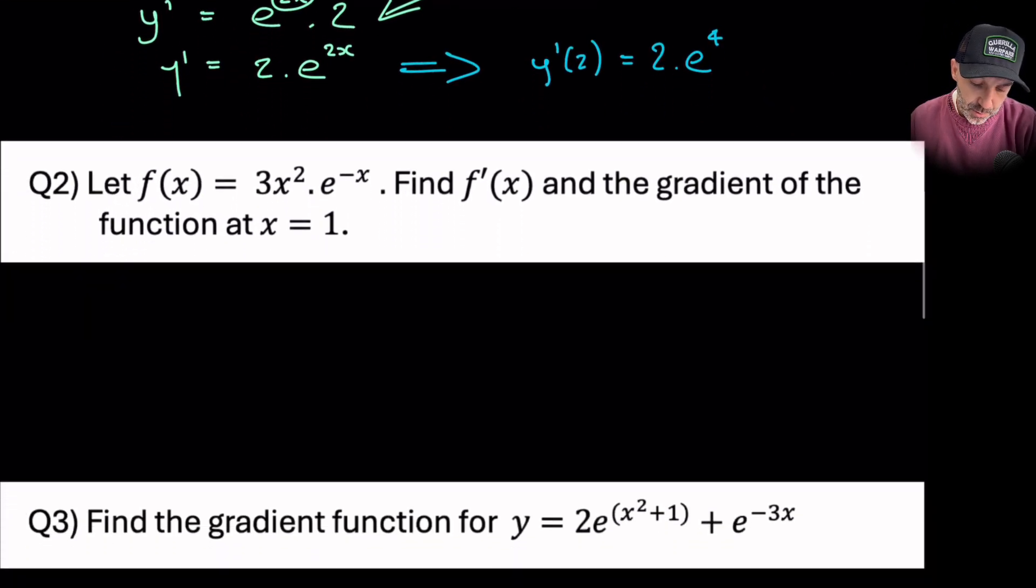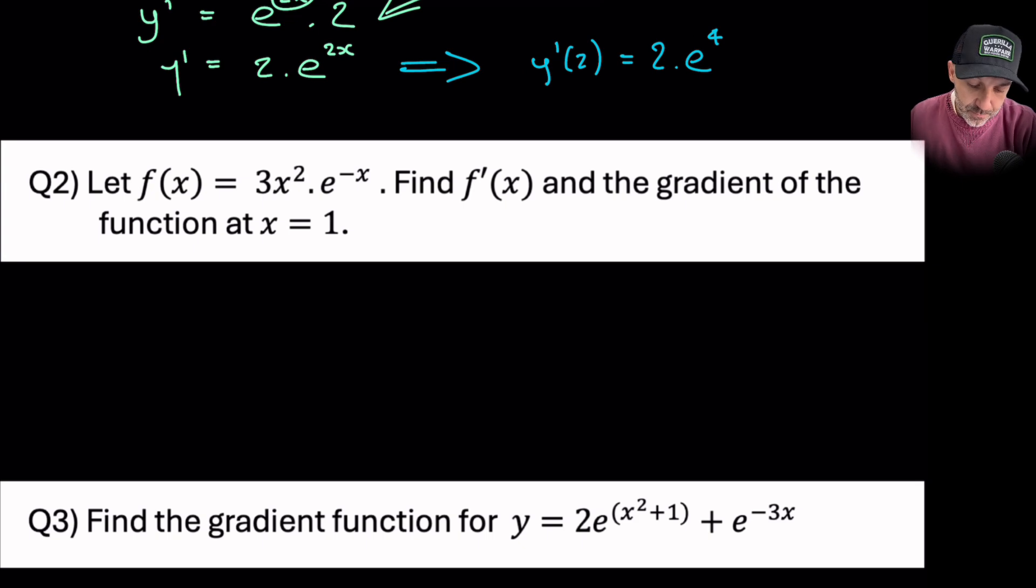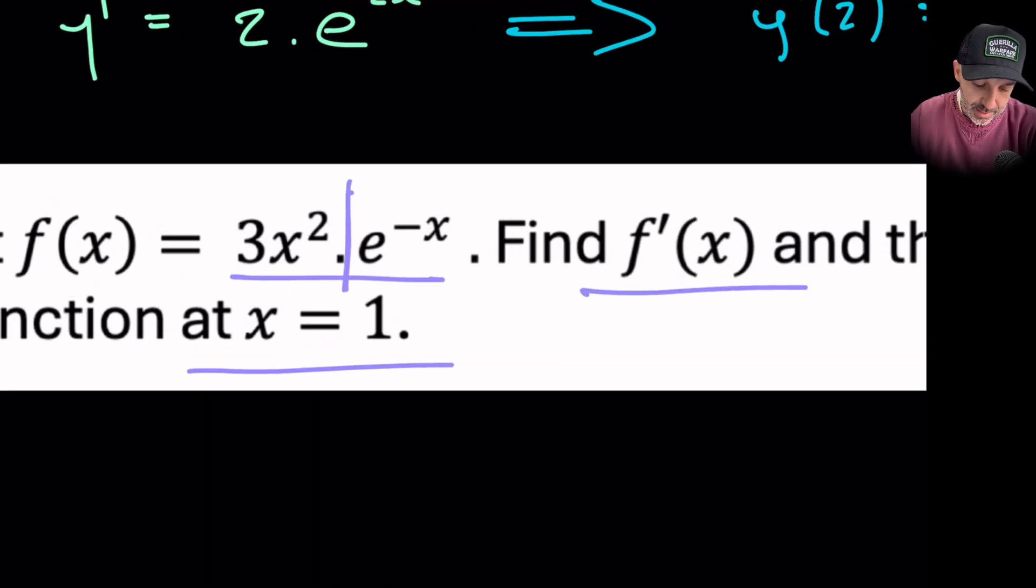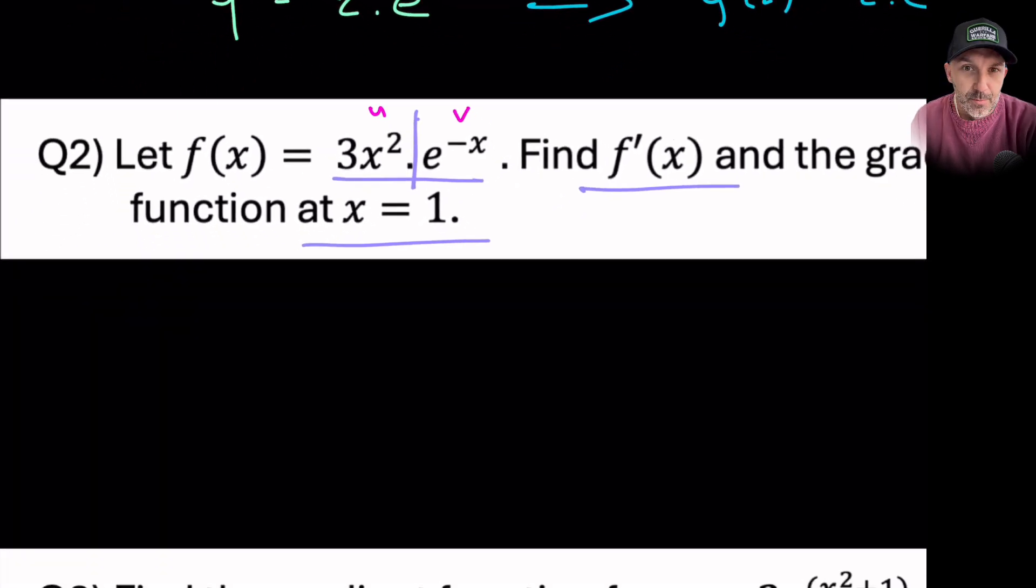Question 2. So this one's getting a little bit more difficult now. There's a product here, and you can watch my other video on how to deal with a product of two values times together. So it says find the derivative of f(x) and the gradient of the function at 1. So again we're going to differentiate this function and then substitute 1 into it. I'm not going to go over the whole of the product rule operations. I'm going to simply start with labeling up u and v.